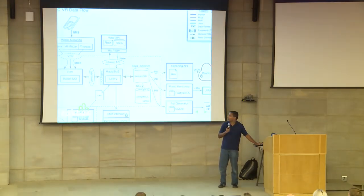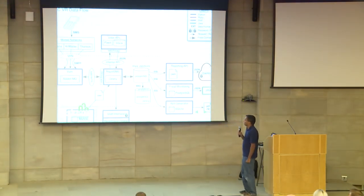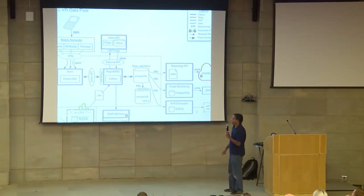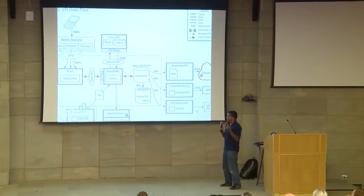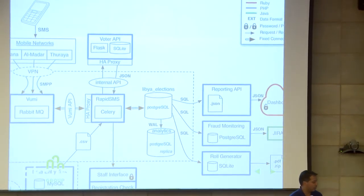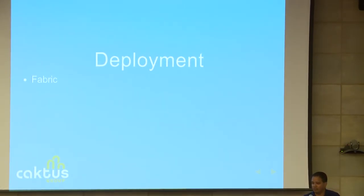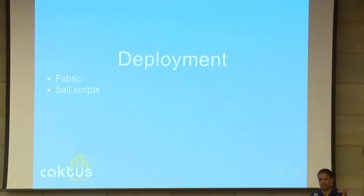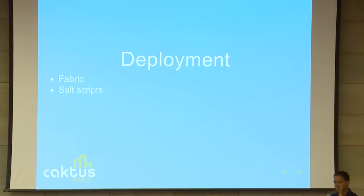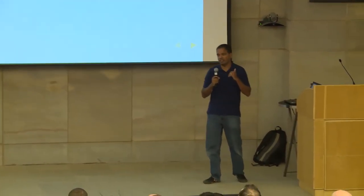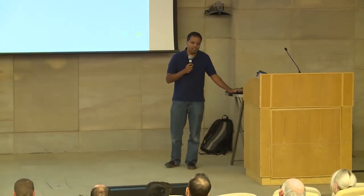I want to briefly talk about deployment. The part that we built is that little blue box — all our partners helped build the rest. For our piece, we had three application servers, a database server, multiple analytics servers — somewhere between 15 and 20 virtual machines total. We used Fabric, a remote execution tool that allows you to easily deal with multiple servers across SSH. We used Salt as our deployment tool — a declarative way of saying what you want your server to look like. And we used our Cactus Django project template, which has all the Salt and Fabric scripts together in one open source place.